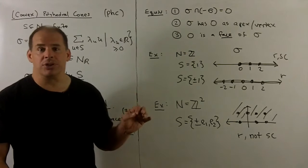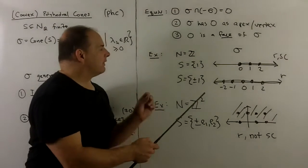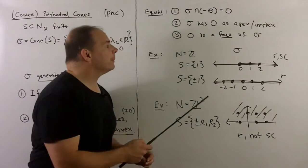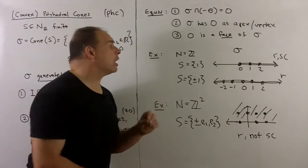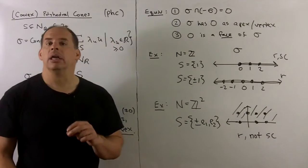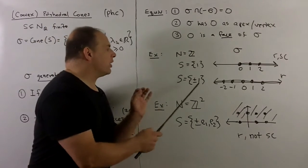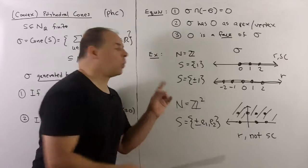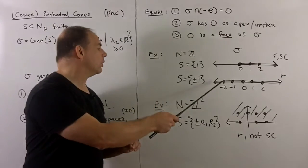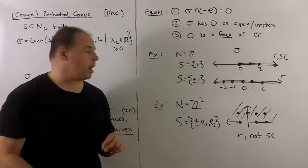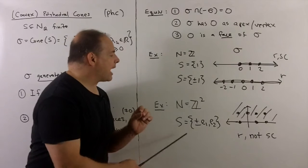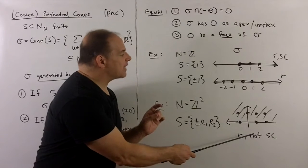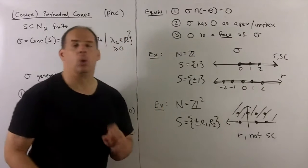For some low-dimensional examples, let's start in dimension one. With N equal to Z and S equal to {1}, the cone generated over S is just the ray past zero — rational because 1 is an integer, and strongly convex since it contains no lines and zero is a vertex. If we take S equal to {+1, -1}, the cone generated over S is the entire real line. This is still rational, but not strongly convex — it contains a line, and zero is not a vertex. Finally, with N equal to Z^2 and S equal to {±E1, E2}, we get the upper half plane. This is rational but not strongly convex because it contains the x-axis, and zero is not a vertex.